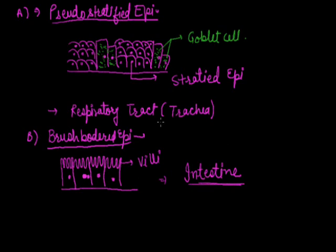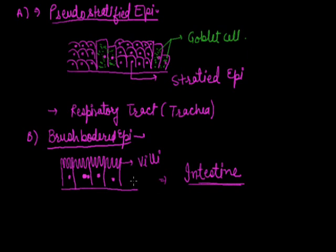In the respiratory tract, goblet cells secrete mucus which provides protection. Whenever bacteria, dust particles, or other foreign materials attempt to enter the respiratory tract, they become embedded in the mucus. The next specialized type is brush border epithelium, helpful in increasing absorption area in the intestine through finger-like structures called villi. This concludes the overview of epithelial tissue. Thank you.